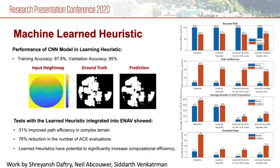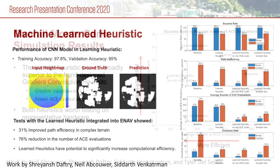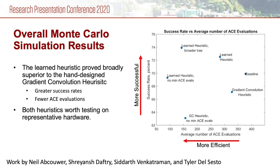The previously mentioned simulation environment was used for collecting training data for the machine learning model and then to run Monte Carlo simulations to test performance. The results showed up to 31 percent improvement in path efficiency in complex terrain and up to 76 percent reduction in the number of ACE safety evaluations compared to the baseline. Overall, the learned heuristic proved broadly superior to the hand-designed gradient convolution heuristic. It achieved greater success rates while doing fewer ACE evaluations. But both heuristics may be worth testing on representative hardware to more fully characterize the potential improvement.